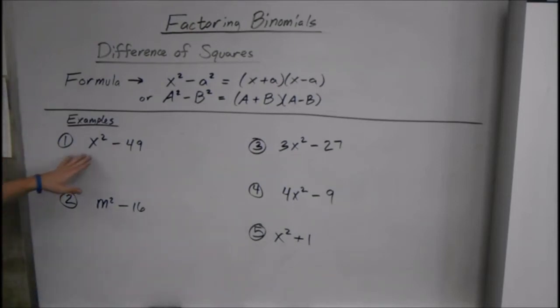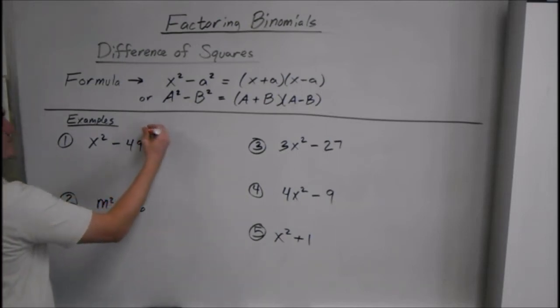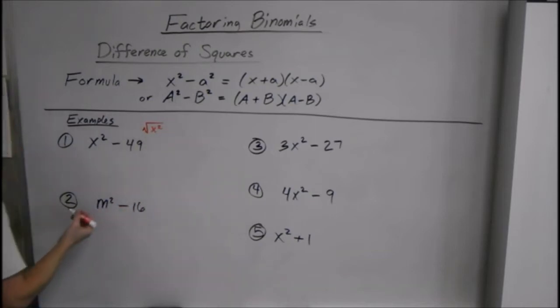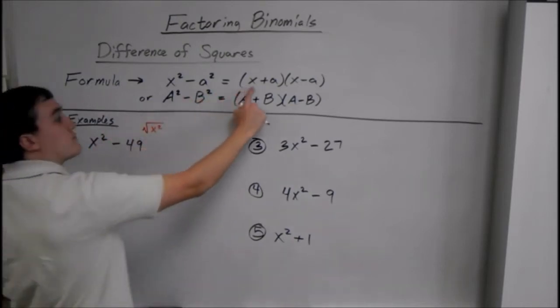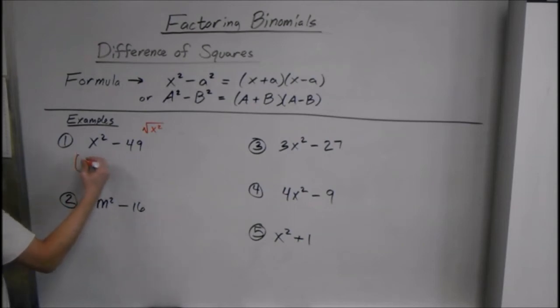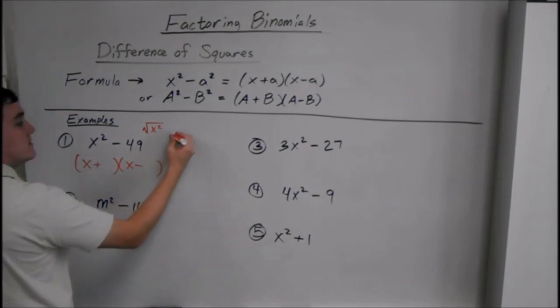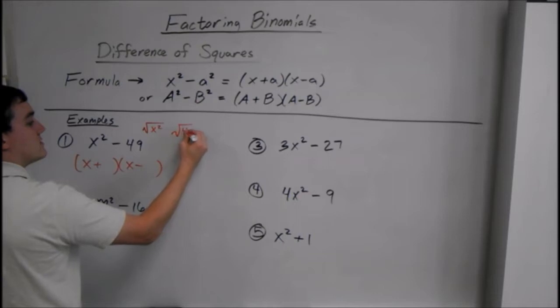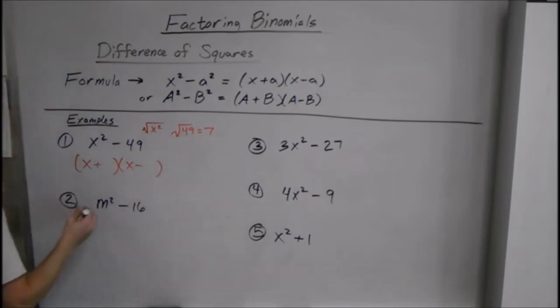So, a few examples. Say we have x squared minus 49. Well, the square root of x squared is just x. So that's what goes first in both of your parentheses. So it's x plus and x minus the square root of 49 is 7. So all you really have to do is know square roots. So x squared minus 49 factors into x plus 7, x minus 7.